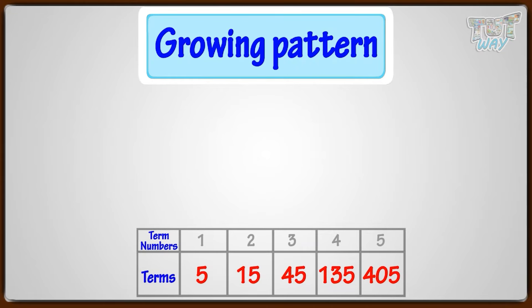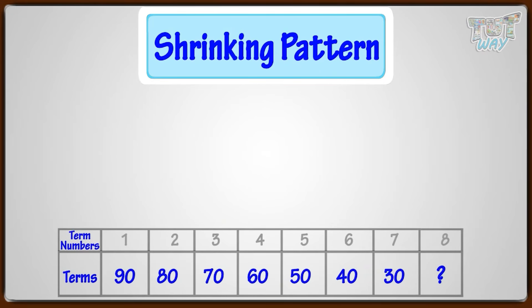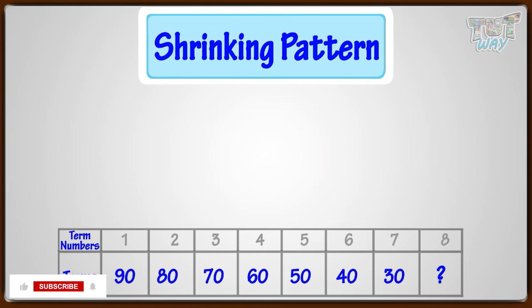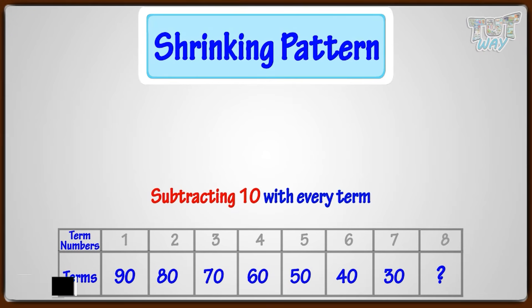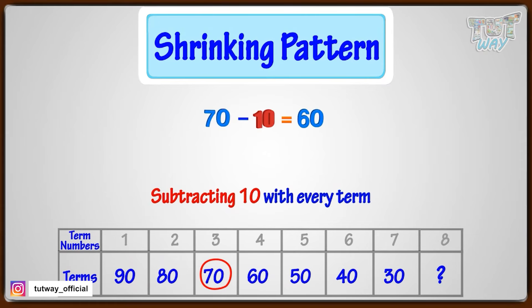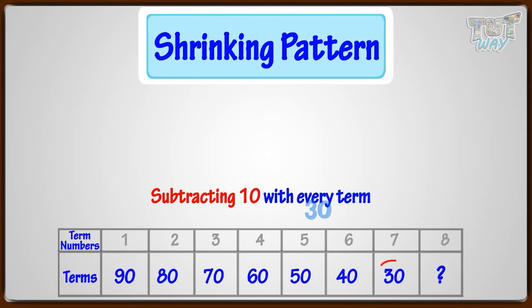Now let's learn another type of pattern — shrinking patterns. Here is an example. The numbers are decreasing with every term, exactly opposite to growing patterns where the numbers increase with each successive term. Let's find out what the next term is. Here, we are subtracting 10 with every term: 90 minus 10 gives 80, 80 minus 10 gives 70, 70 minus 10 gives 60, and so on. So the next 8th term would be subtracting 10 from the 7th term: 30 minus 10, that is 20. So the 8th term would be 20.